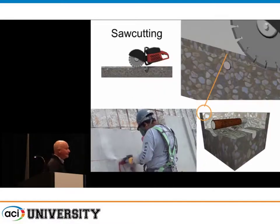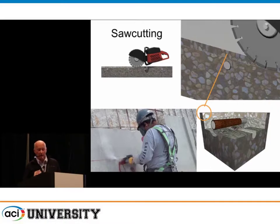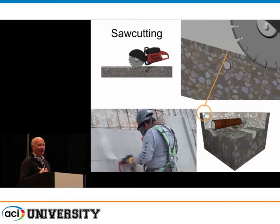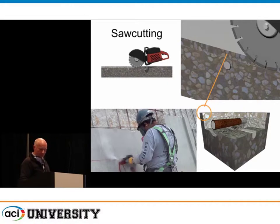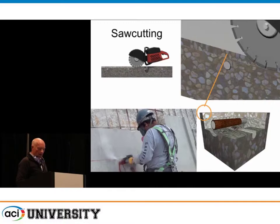Saw cutting is a great thing — nice square shoulders are what we want. Don't cut too deep. We've certainly made the mistake of cutting a bunch of bars. You need to know where the bars are — they're not always two inches back. You can have them half an inch from the surface, so you've got to do some probing. There's nothing worse than having to put splices on a bunch of bars, which we have done. Square them up — chipping hammers, saw cutting, no feather edges.